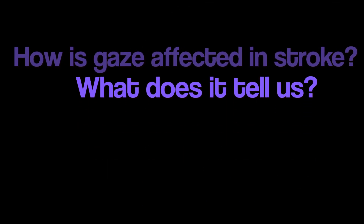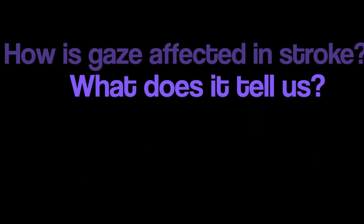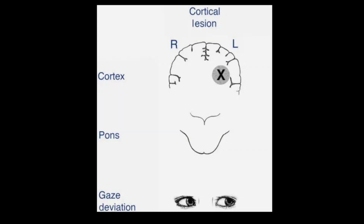How is gaze affected in stroke and what does this tell us? The severity of gaze deviation may vary depending on the severity of stroke an individual is having. Gaze deviation lets us know that the individual might be suffering from a large vessel occlusion, because gaze deviation is one of the cortical signs. Cortical signs means that the stroke has affected the cortex portion of the brain, or the very top portion of the brain.